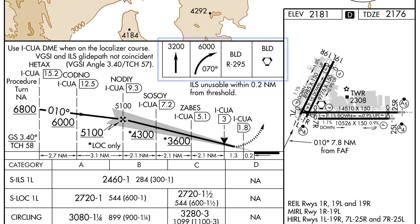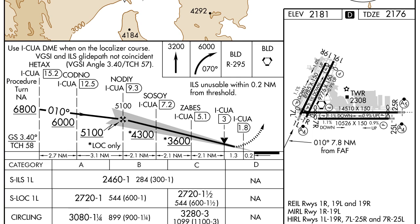Finally, the profile view section contains missed approach icons as a quick reference for flying the missed approach. Since the profile view and minima views are normally the last items looked at before going missed approach, the icons give the pilot a quick reference as to how to begin the missed approach procedure. In this case, the missed approach procedure starts with a climb straight ahead to 3,200, followed by a climbing right turn to 070 and climbing to 6,000 feet.